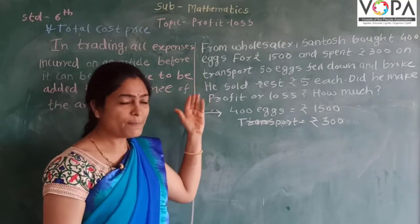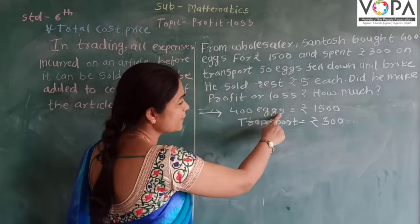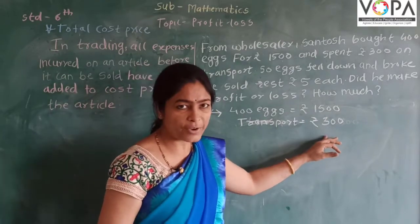First of all, read the problem carefully. 400 eggs, he bought 400 eggs for Rs.1500. And on transport, he spent Rs.300.